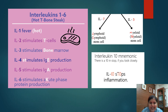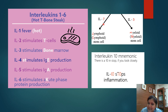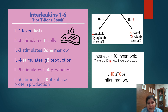Here are some mnemonics created by creative minds. Interleukins 1 through 6 can be remembered as 'Hot T-Bone Steak': 1 for hot/fever, 2 stimulates T cells, 3 for bone marrow, 4 stimulates IgE, 5 stimulates IgA, and 6 stimulates acute phase reactants. Another mnemonic: interleukin 7, when 7 is inverted, looks like an L — for lymphoid lineage. IL-3, when 3 is rotated, looks like M — for myeloid lineage. Interleukin 10 downregulates MHC class II and reduces inflammation — the 1 and 0 look like T and O.